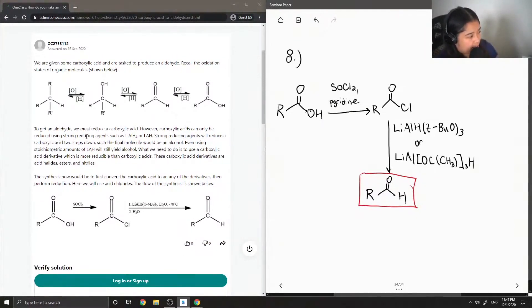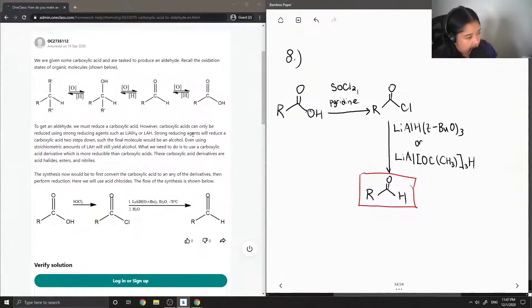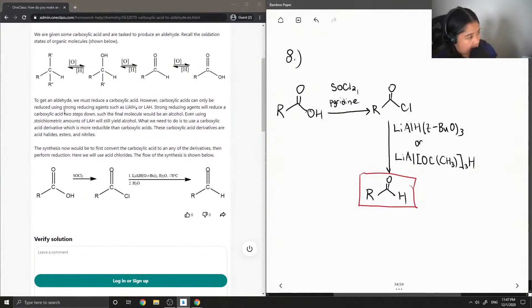To get an aldehyde, we must reduce a carboxylic acid. However, carboxylic acids can be reduced using strong reducing agents, such as lithium aluminum hydride or LAH. Strong reducing agents will reduce a carboxylic acid two steps down, such the final molecule would be an alcohol. Even using stoichiometric amounts will still yield an alcohol.